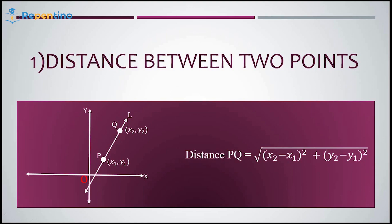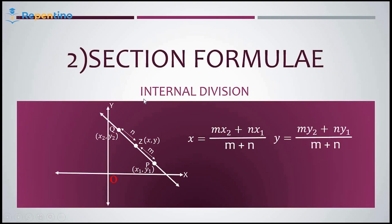Coming to section formulae, let's start with internal division. A point Z whose coordinates are x and y is dividing the line segment PQ internally in the ratio m : n. So x equals (mx2 + nx1) / (m + n), and y equals (my2 + ny1) / (m + n).